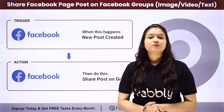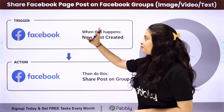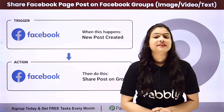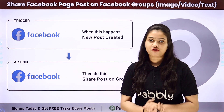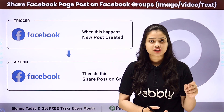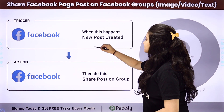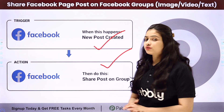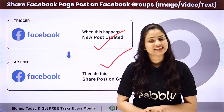So how are we going to automate this entire process? We will have to set up a connection between our Facebook pages and Facebook groups, and we are going to do that without any coding or programming skills with the help of Pabbly Connect. Pabbly Connect works on two principles: Trigger and Action. In Trigger we are going to take Facebook pages and in Action we are going to take Facebook groups, and we are going to connect both of them to automate this entire process.